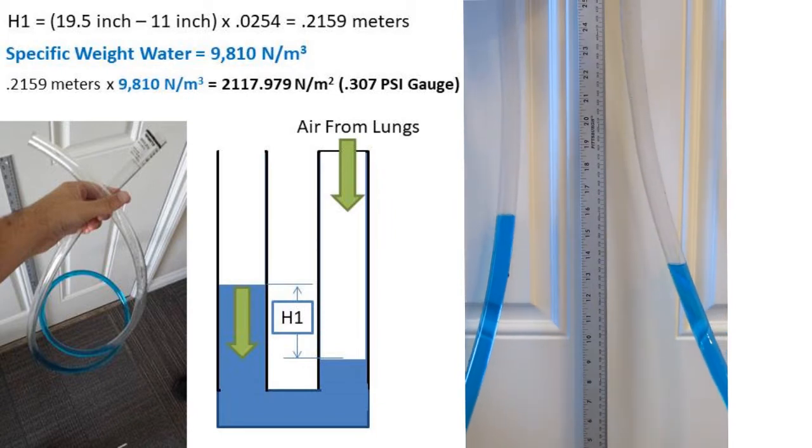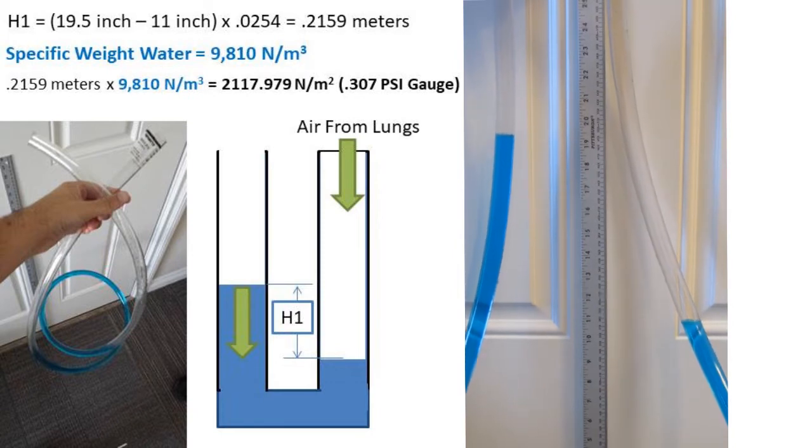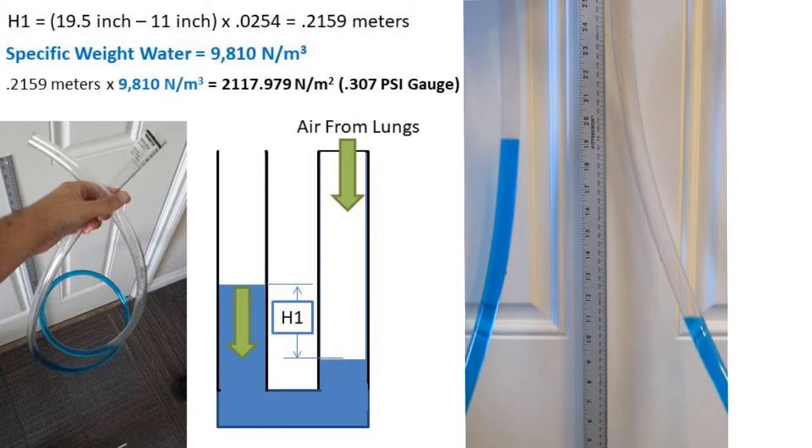Now you might be wondering why we didn't include atmospheric pressure in our calculations. Both ends are affected by atmospheric pressure, so we measured the pressure in gauge instead of absolute pressure. That concludes this video. Thank you for watching. Hopefully I have earned a like, share, or subscription.